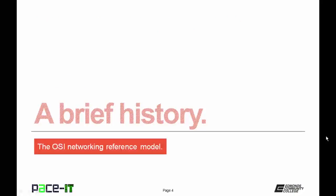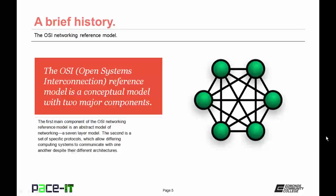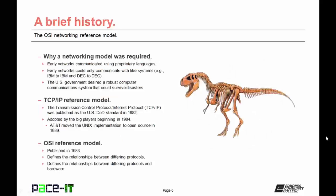The Open System Interconnection Reference Model is a conceptual model with two major components. The first is an abstract model of networking — a seven-layer model. The second is a set of specific protocols which allow differing computing systems to communicate with one another despite their different architecture. So why was a networking model required?